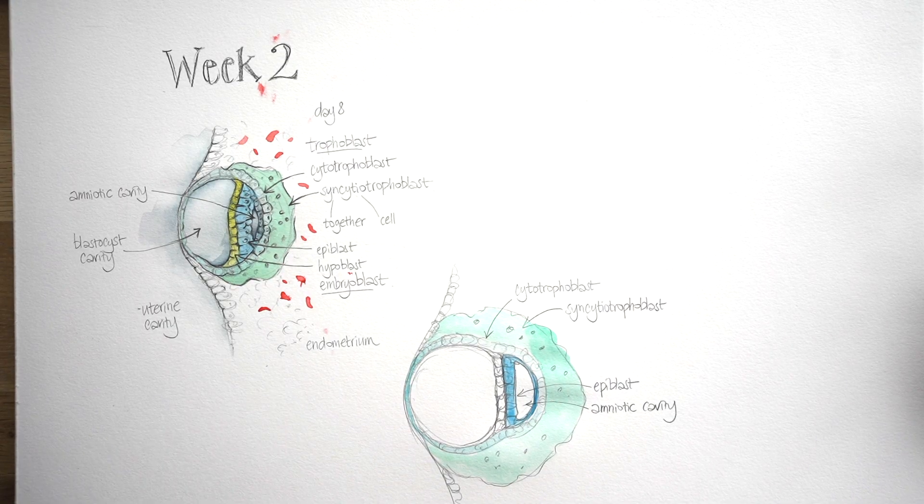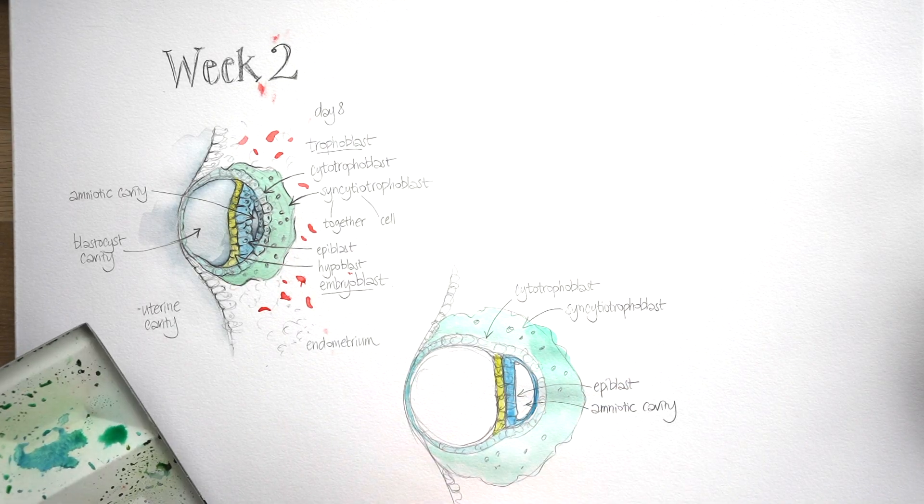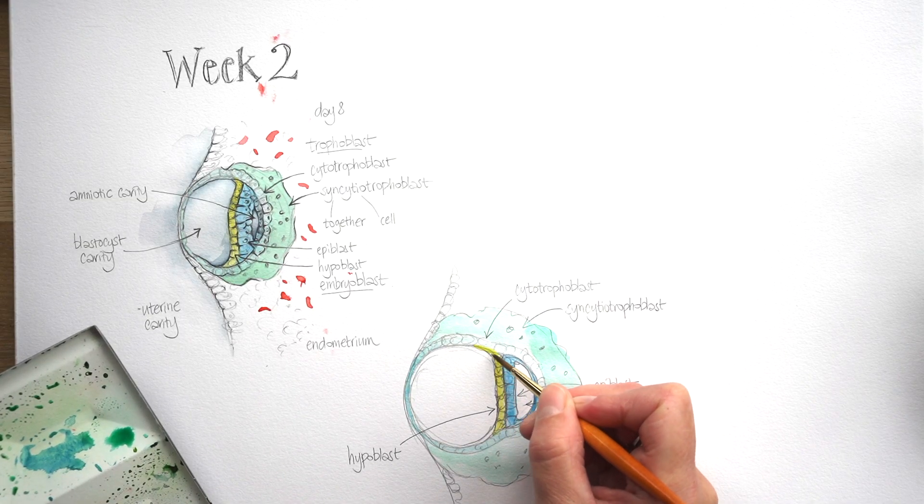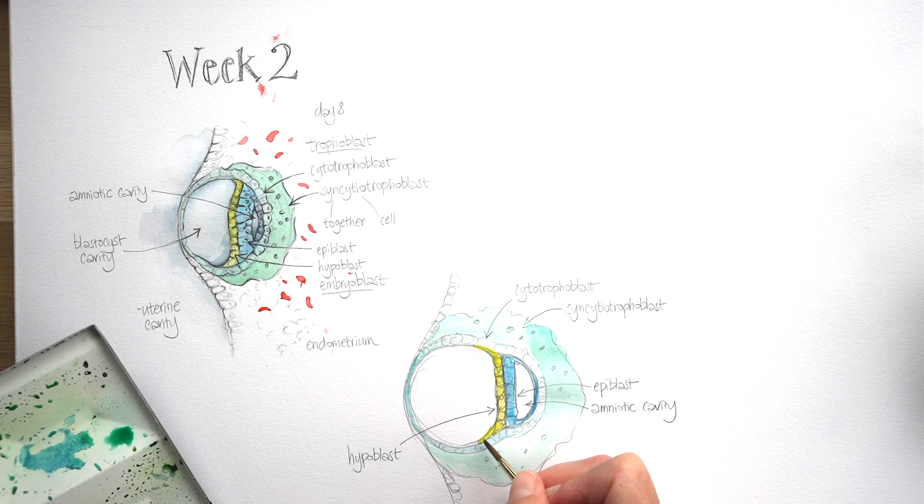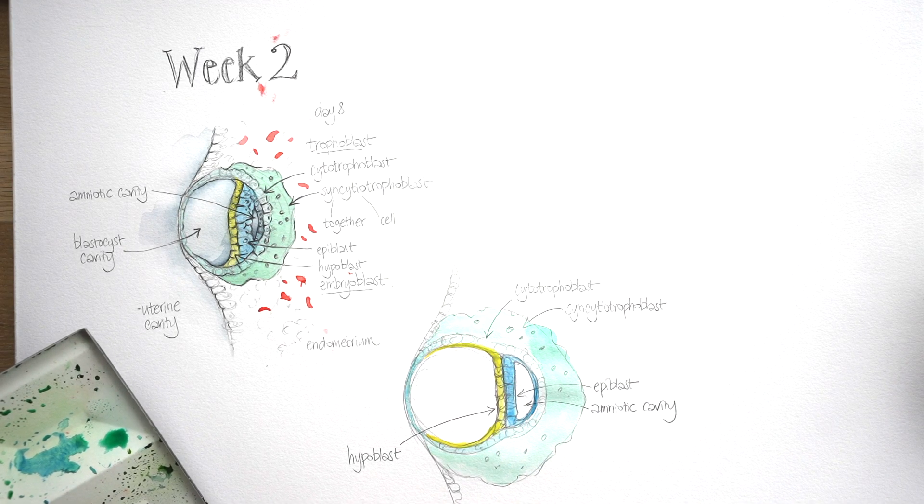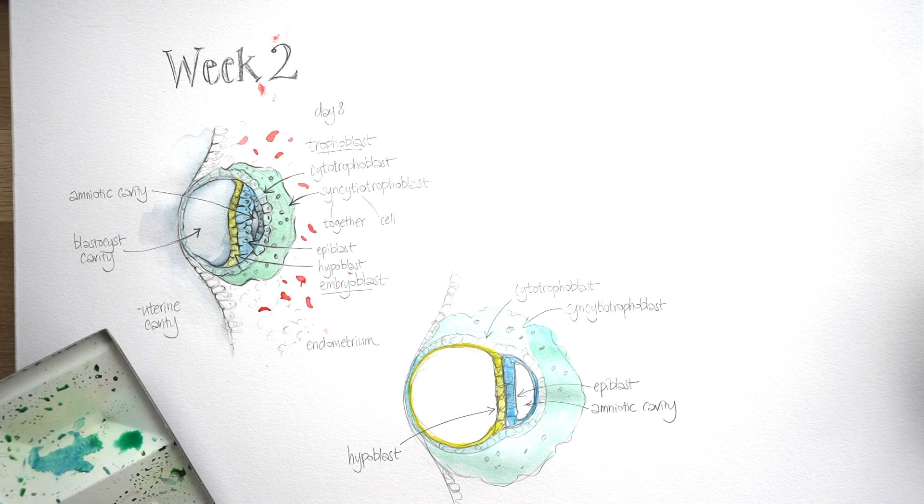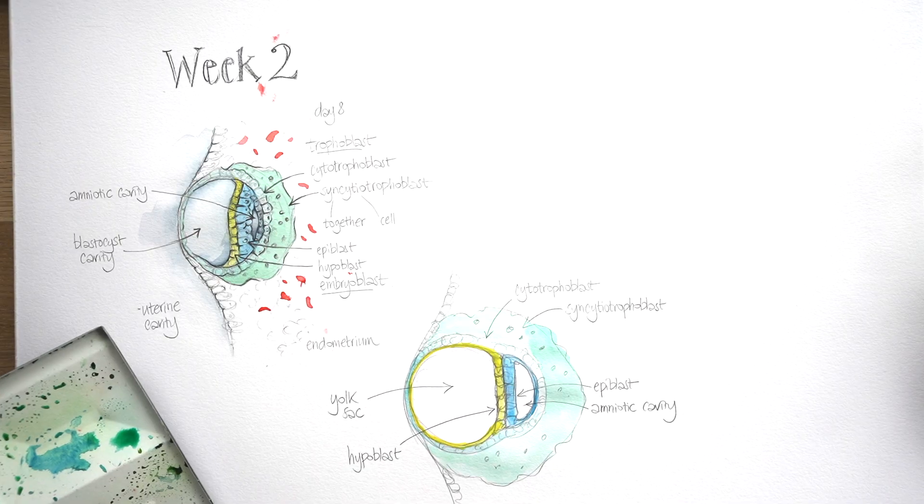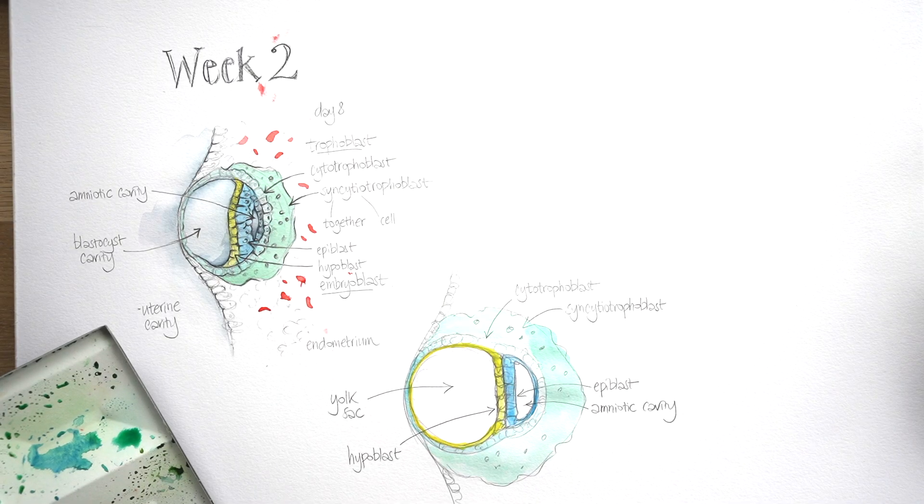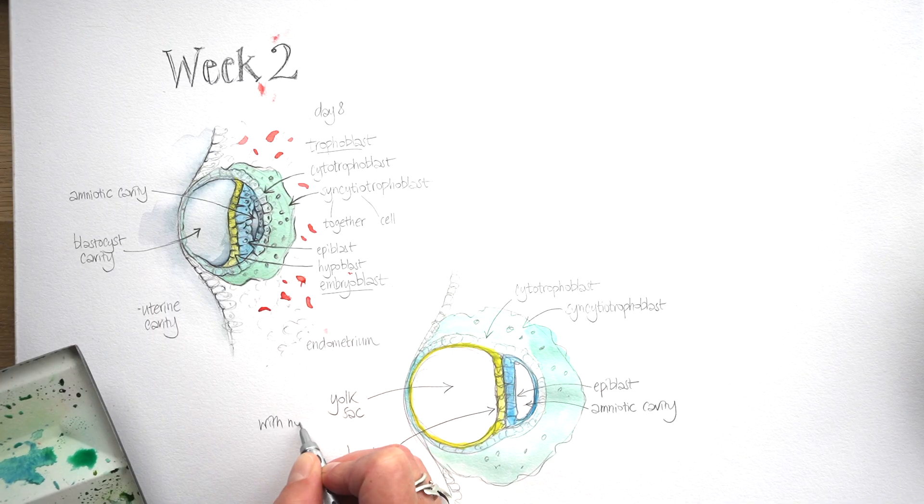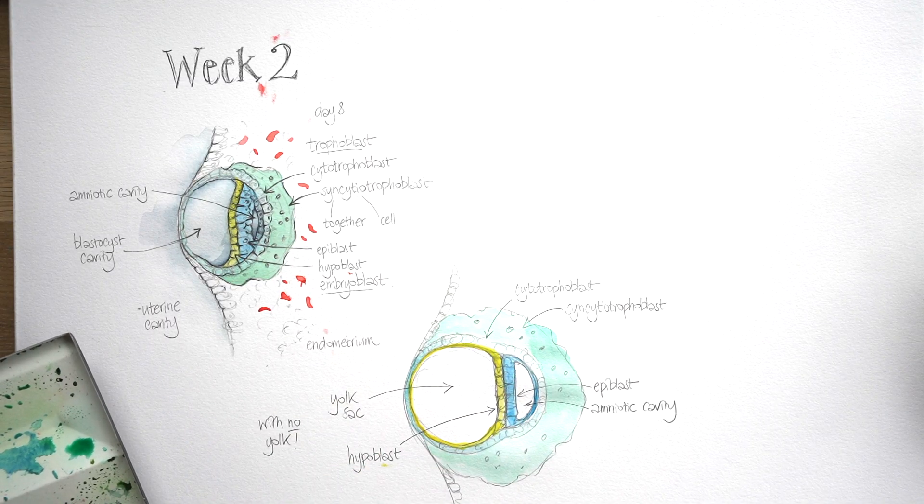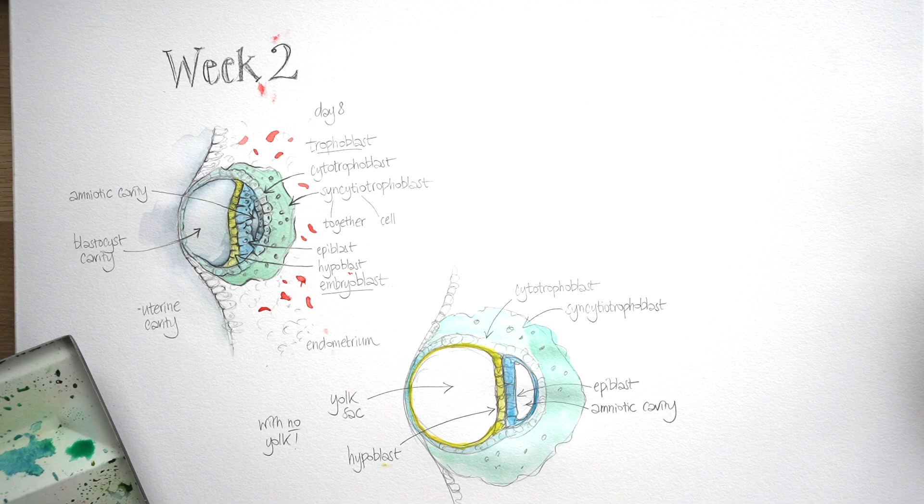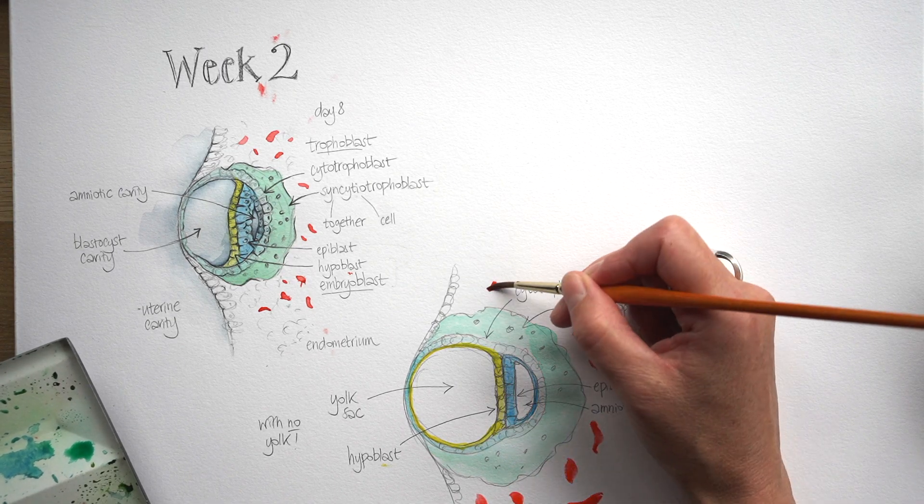Now, the hypoblast faced the original blastocyst cavity, but that is becoming relined with hypoblast cells, which are starting to migrate around the inside of that cavity. And this is the point at which that cavity changes its name. It's now known as the yolk sac. Now, this is interesting because it's a yolk sac which is just full of fluid, not yolk. So it's a yolk sac with no yolk. The only reason it's there really is that you once had ancestors that laid eggs, and that's a memory of that.